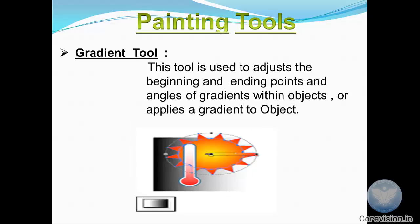Gradient tool. This tool is used to adjust the beginning and ending point and angles of gradient within object or applies a gradient to an object. We can see in the image. And this is a symbol of gradient tool.